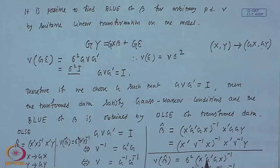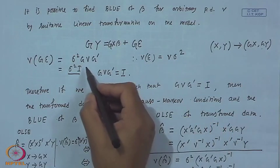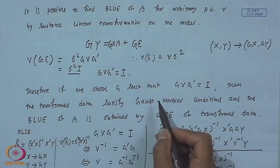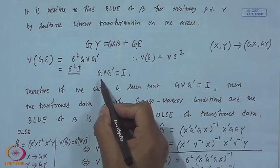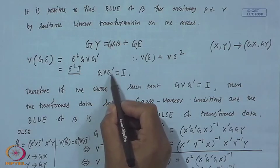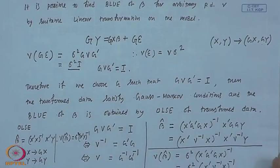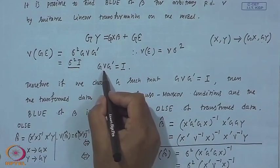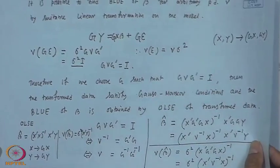Still I have not talked about how to get this G. We have V and we have to choose G such that GVG' = I, knowing that V is a positive definite matrix. We have to choose G such that V⁻¹ = G'G.